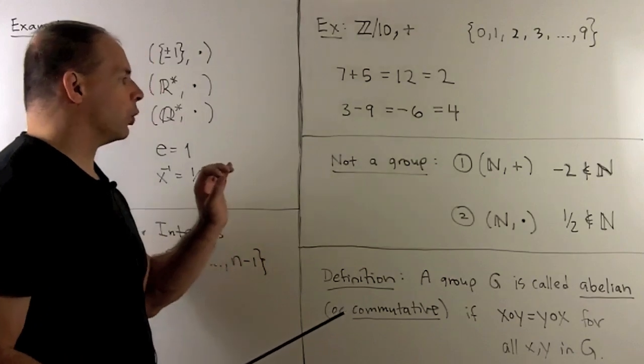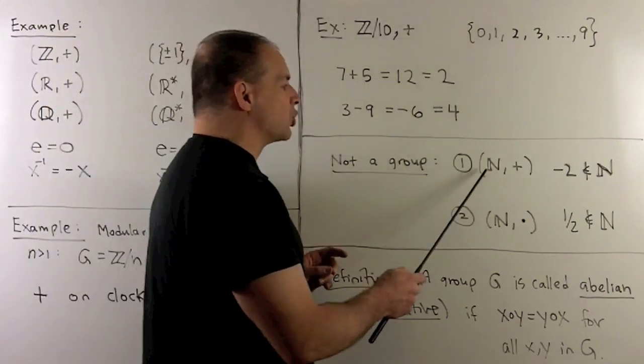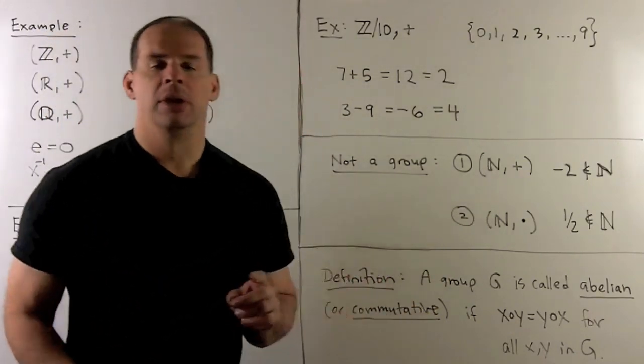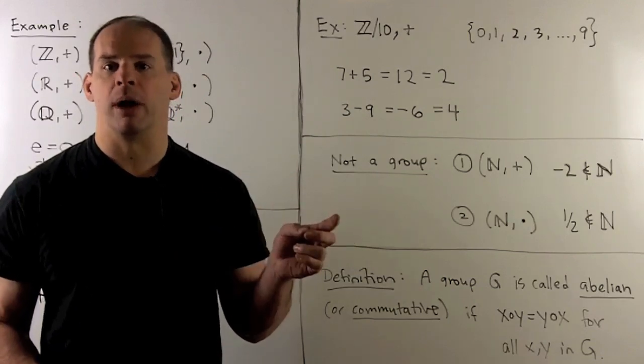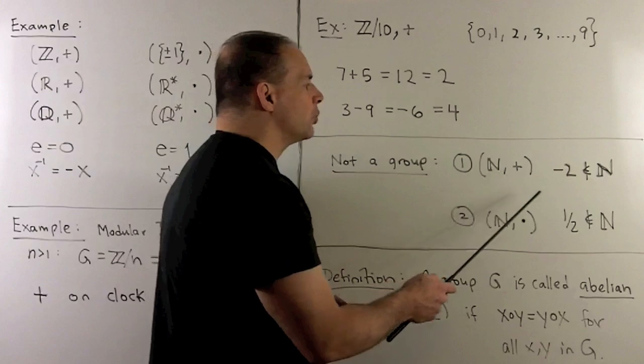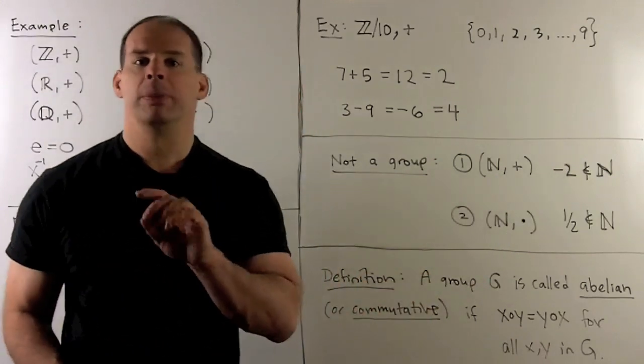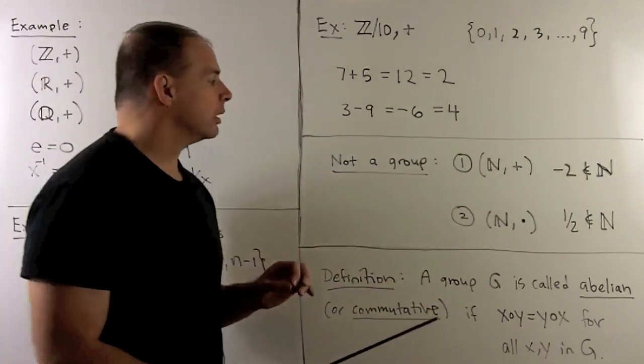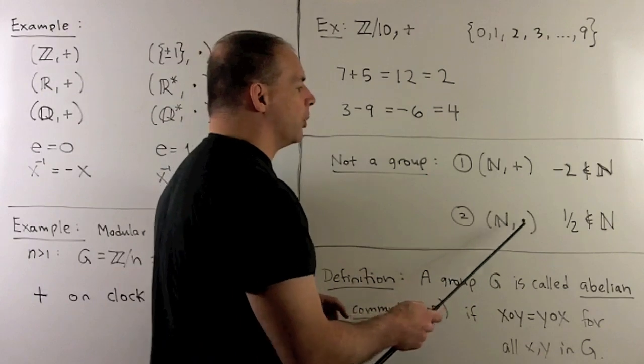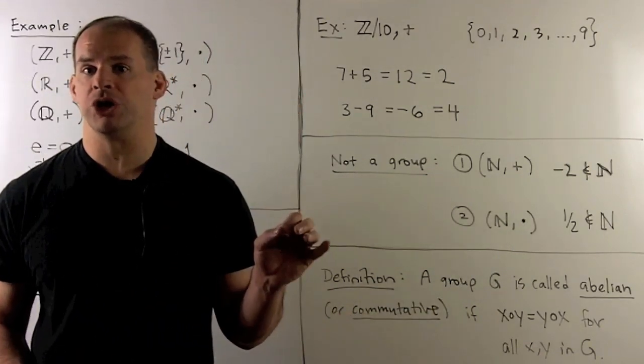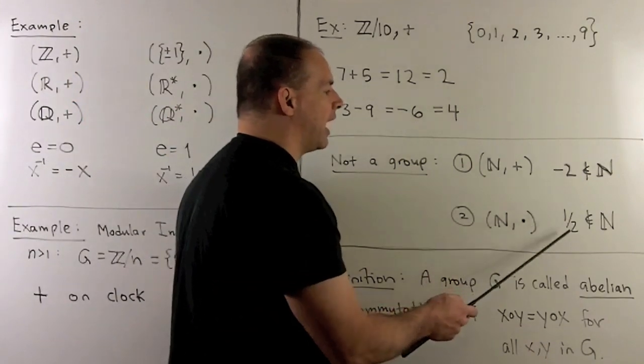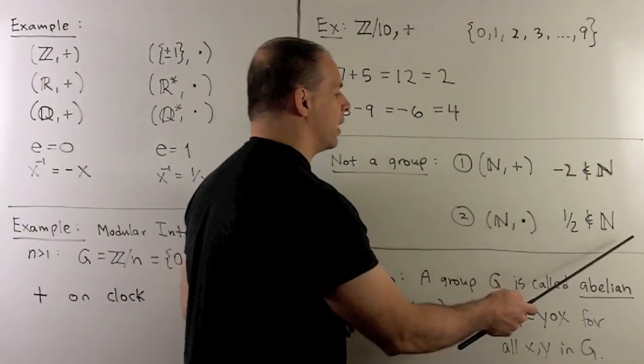Now, for things that wouldn't be a group, we can take the natural numbers under addition. In this case, we're not closed under inversion. 2 is in the natural numbers, but the additive inverse would be -2, so that fails. If we take the natural numbers with multiplication, again, not closed under inversion. 2 is in the natural numbers, but 1/2 is not. So again, that fails.